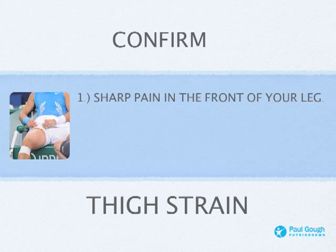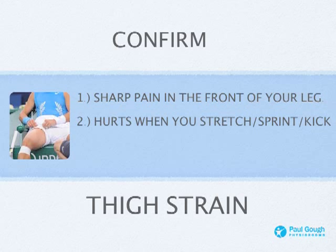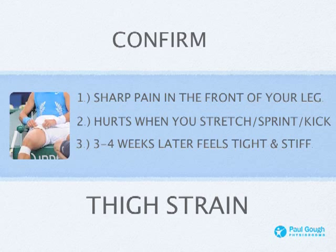First, let's confirm that you've got a thigh strain. You've got a sharp pain in the front of your leg — you probably felt it immediately. Something happened: you sprinted, you kicked a football, and you felt that initial sharp pain in the front of your thigh. It hurts when you stretch, when you sprint, or when you kick. That could be even now — you could be a month down the line from injury and if it still hurts when you stretch, sprint, or kick a football, you've still got a problem. Three to four weeks later, you're still getting these problems — that's not uncommon for a thigh strain.